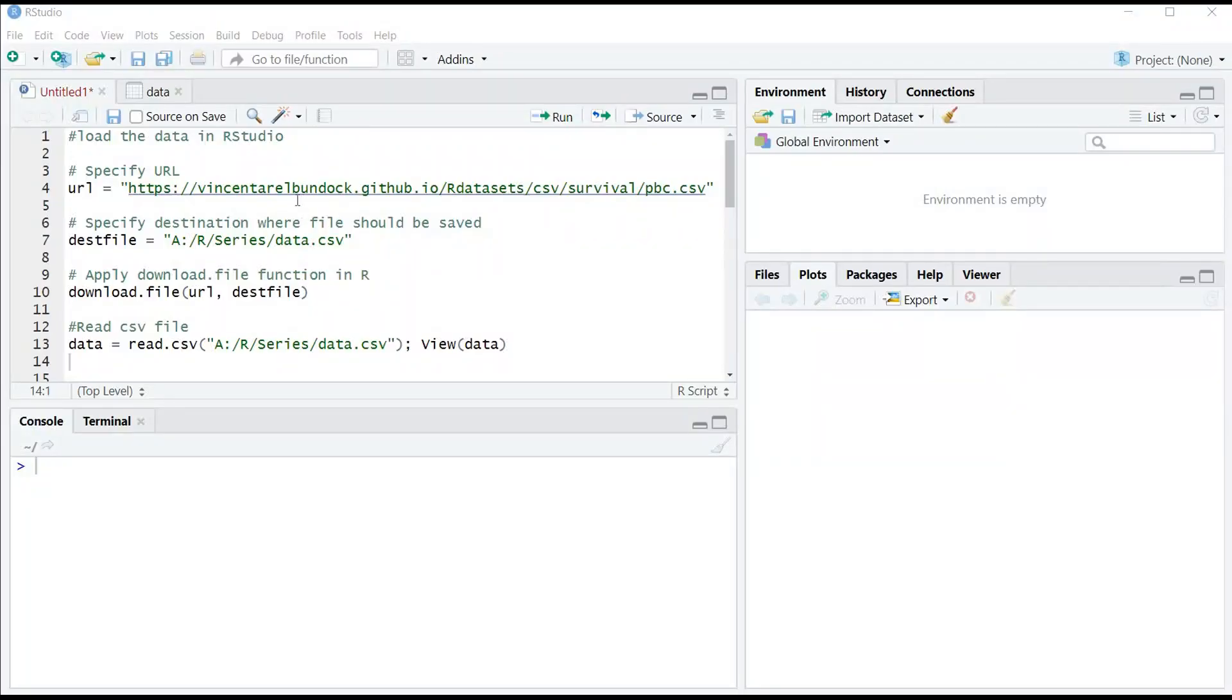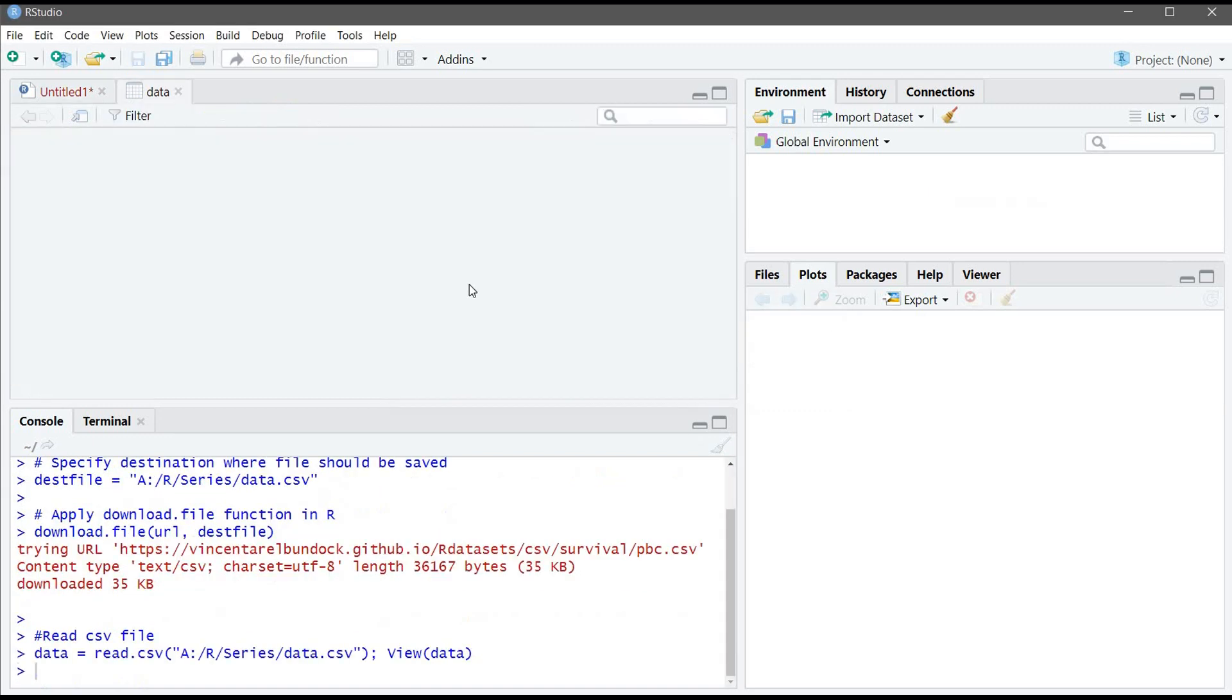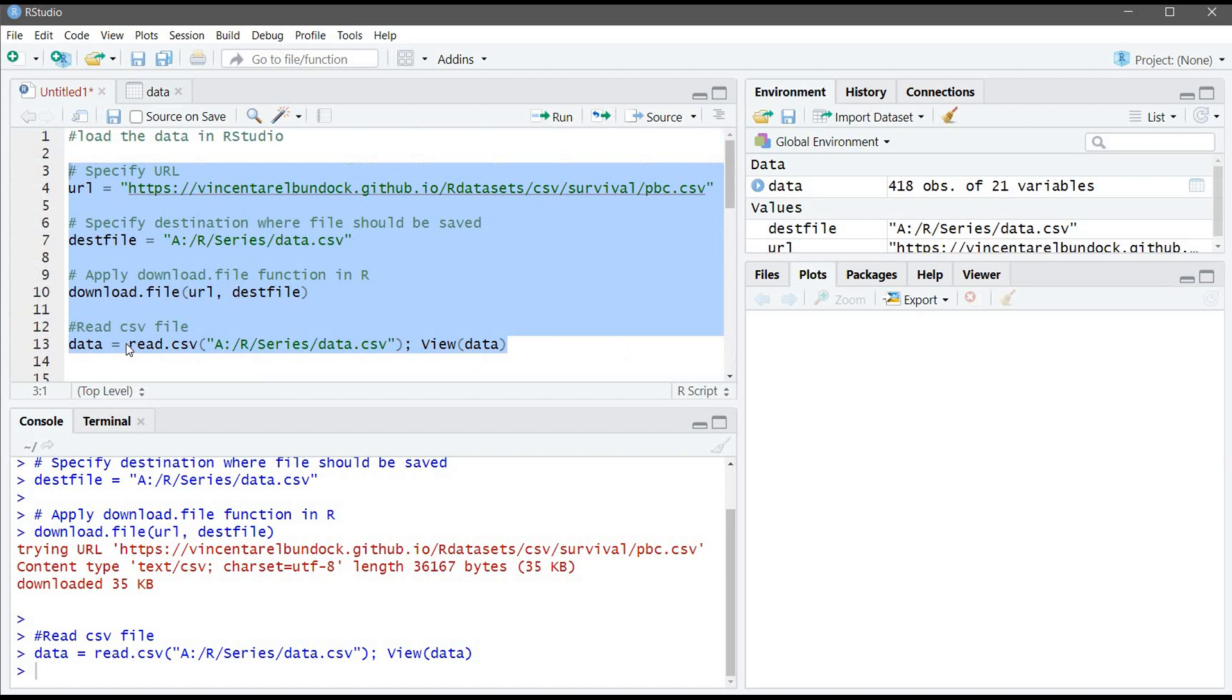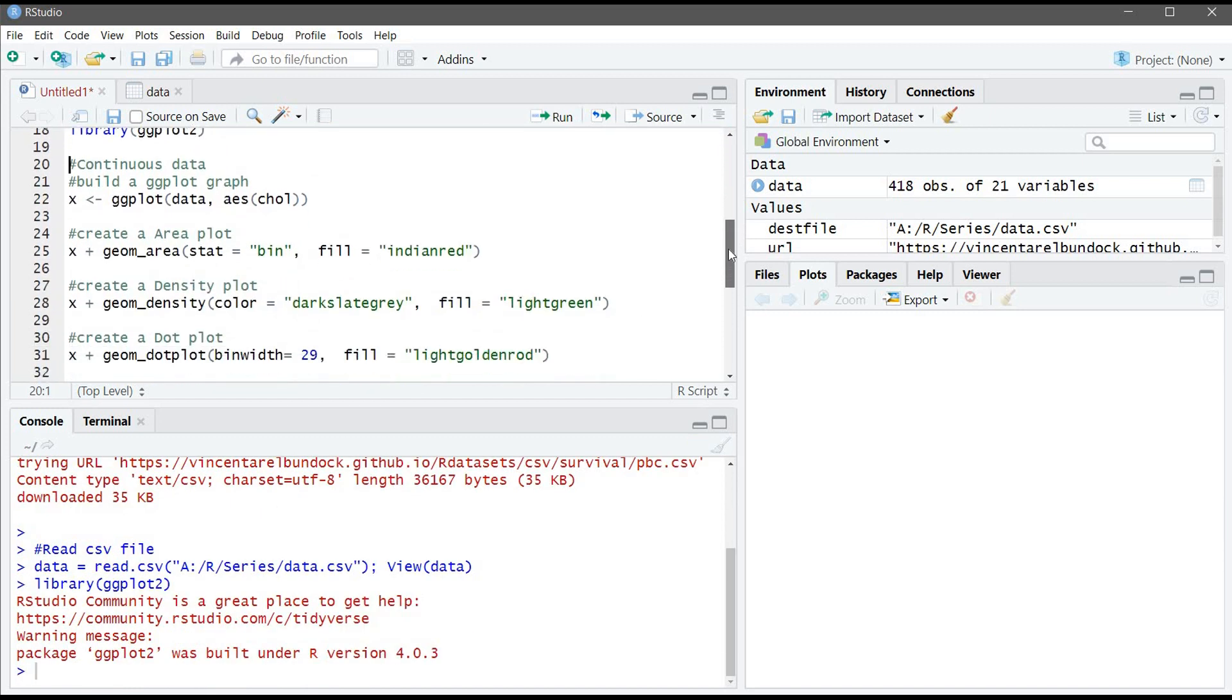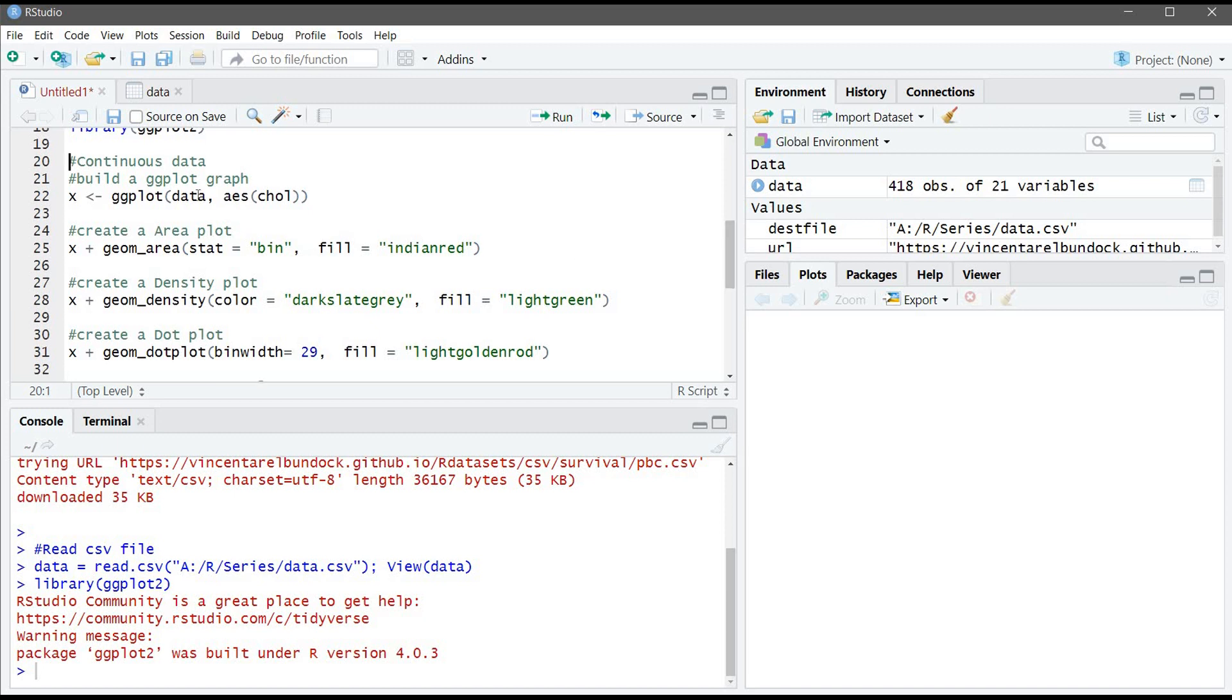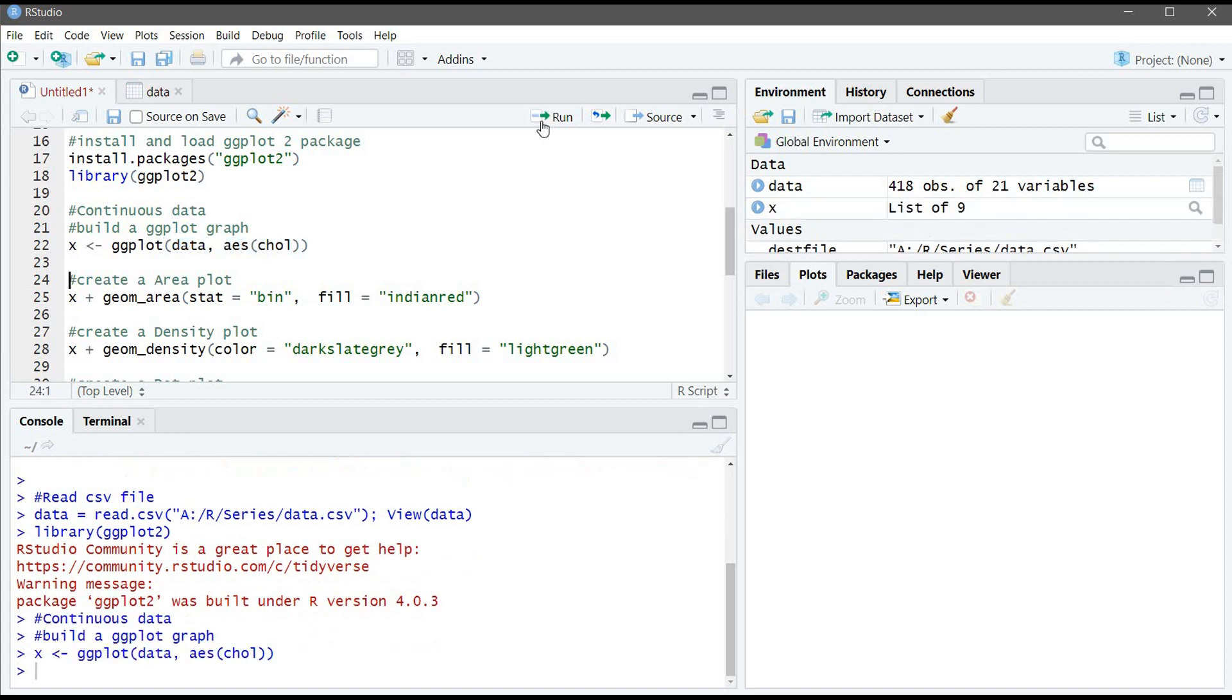First what we need to do is we need to load the data. So the first four commands will download and load data into R. So let's start with that. So now our table is ready and we assigned it to data. Second, what we need to do is we need to install and load the ggplot2 into R. Since I already installed it, I will just load it. So now we will go to continuous variables. We'll start with the continuous variable. As I mentioned before, we need to initiate a ggplot first. To do that, we need to specify the data and the variable aesthetics. So let's start with this command. So now we have a ggplot object.